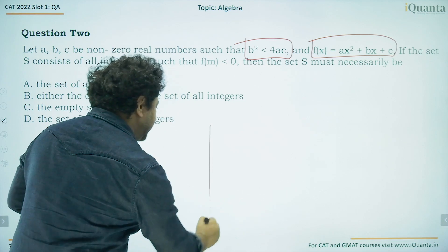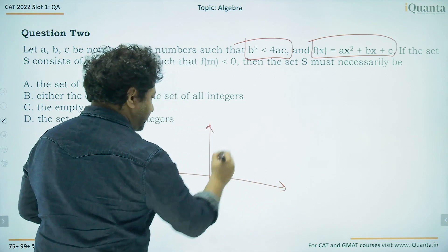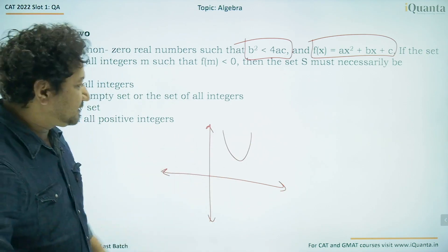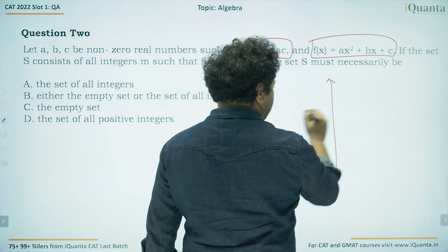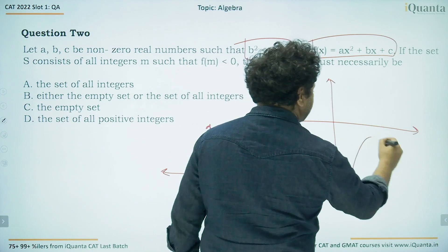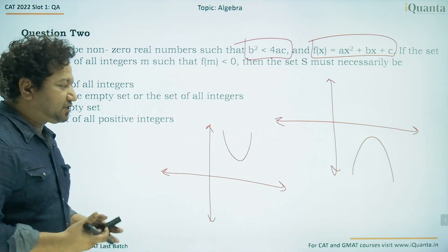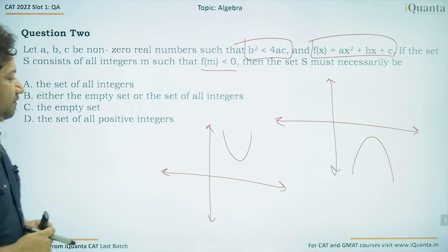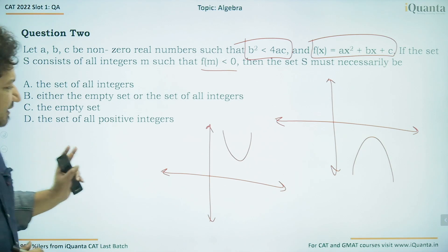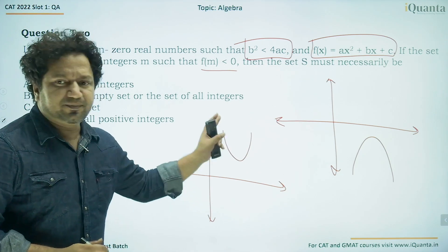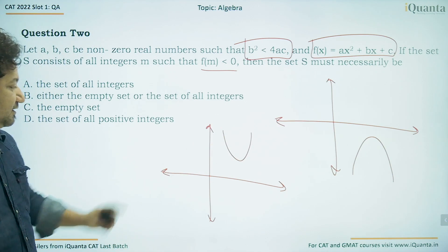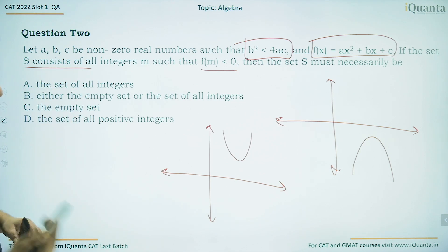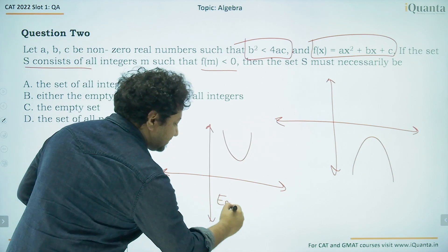We have two cases. In the first case, the parabola opens upward. Since the roots are imaginary, the parabola does not touch the x-axis anywhere. So whatever value of x you take, f(x) is always positive. Since we need f(m) < 0, it is never satisfied. The set of all such m would be an empty set.